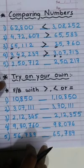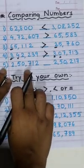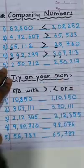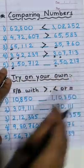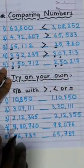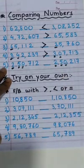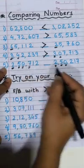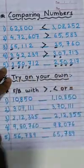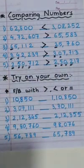Great. Now let's move to the last one: 2,50,712 and 2,50,217. Let's compare the first digit — equal. Second — equal. No worries, we will go to the third one. This also the same? No problem. We will go to the next: 7 and 2. So here 7 is bigger than 2, that's why this number is bigger. Easy? Great.